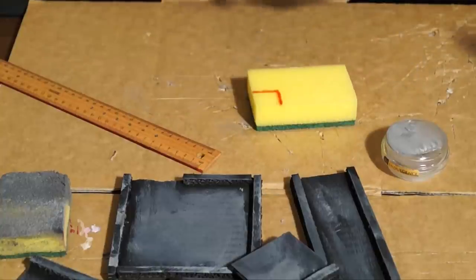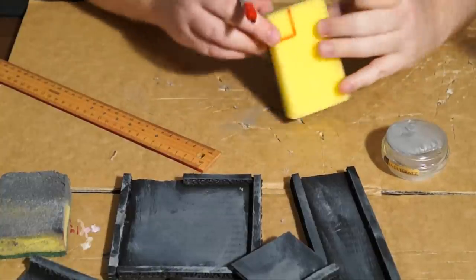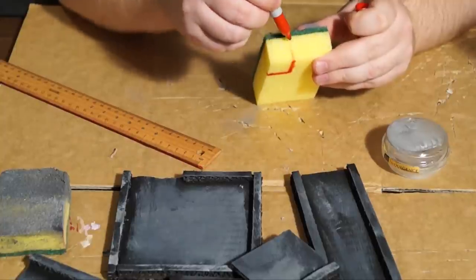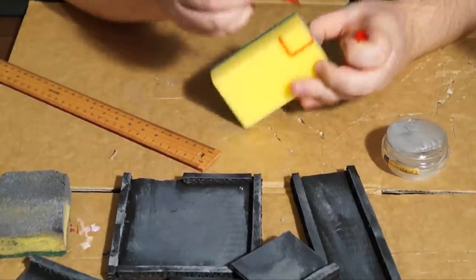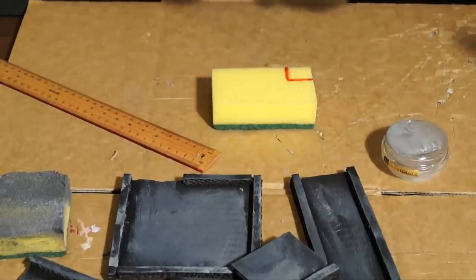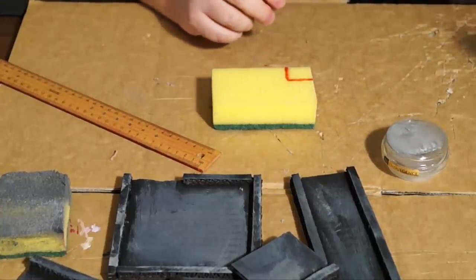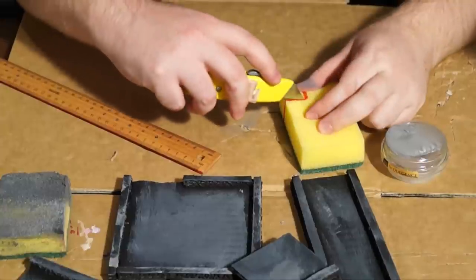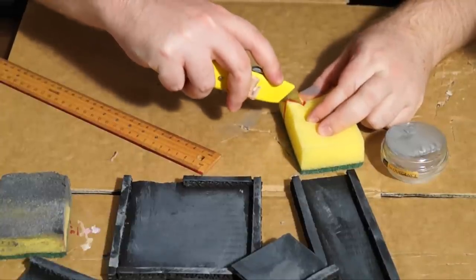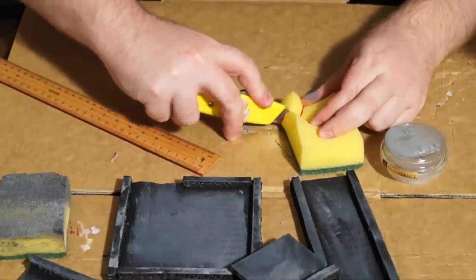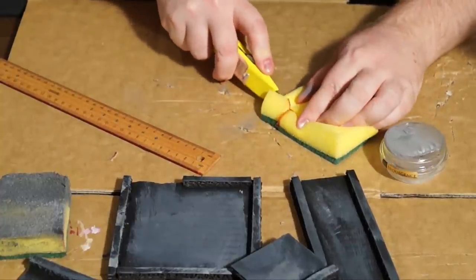We're actually going to cut out that square out of the sponge. Then you grab your craft knife and be very careful here. Always cut away from yourself. I did stab myself once when I was a child with a craft knife, so I learned the hard way. You learn the easy way by listening to what I say.